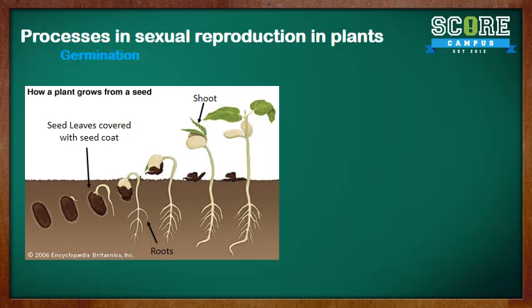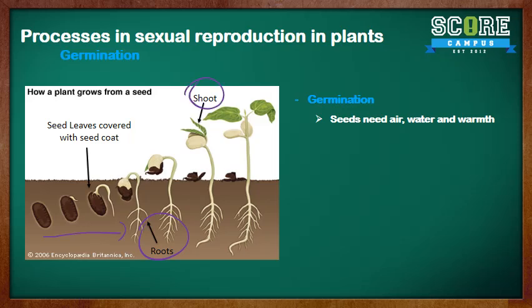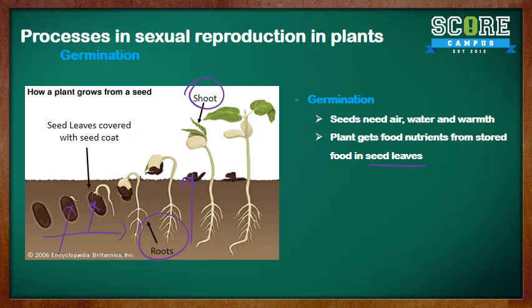Moving on to the last stage of sexual reproduction in plants: germination. For a seed to germinate, it needs air, water, and warmth. As the seed grows, the roots start to grow too. However, until the shoot appears, the seed is still unable to make its own food. The plant gets its nutrients from the food stored in the seed leaves — the brown structures you see here. Once the shoot appears, the plant can make its own food, and the seed leaves drop off.